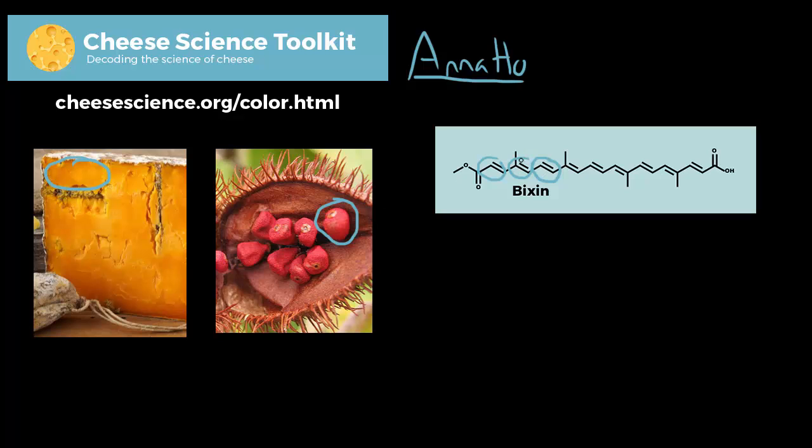The problem with this is it's fat-soluble, and milk is mostly water. If you try to add straight bixin to milk, which is mostly water, it won't mix well. You'll get an orange film on the top of your vat of milk. You want it to mix thoroughly, so what the annatto extract producers have to do is convert that bixin into a water-soluble form so it mixes in milk. How they do that is usually treat it with an alkali substance, something like a strong base like sodium or potassium hydroxide.